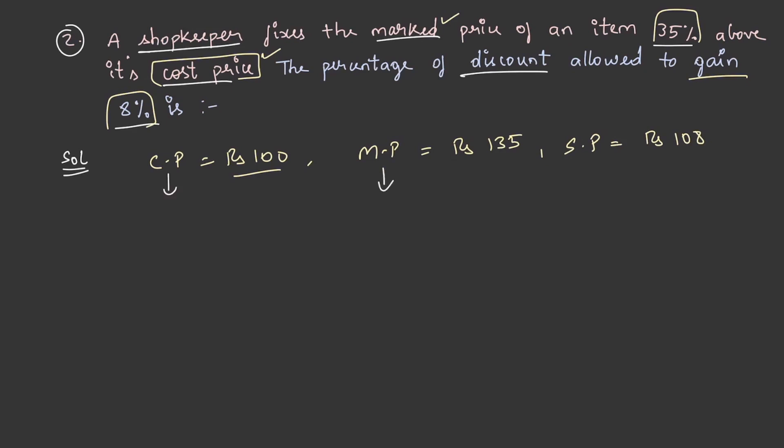Now having achieved the cost price, the marked price, and selling price, let us find out the percentage of discount. The formula for percentage of discount is discount by marked price into 100. The discount here is rupees 27, that is the difference between marked price and selling price.